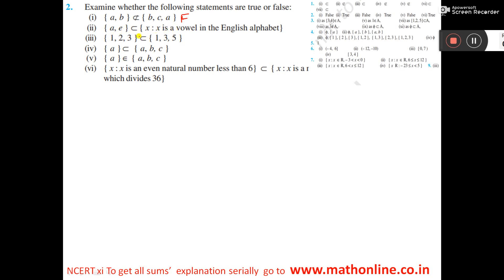Now AE, and this one is X is a vowel in the English alphabet. So that will be A, E, I, O, U. And see here it is AE. So it is a subset. It is true.